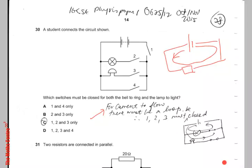They ask you in this question, which switches must be closed for both the bell to ring and the lamp to light? For that to happen, switch 1 must be closed, switch 2 must be closed, and switch 3 must be closed. The correct response will be C, 1, 2 and 3 only.